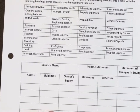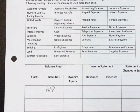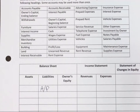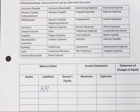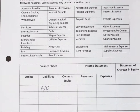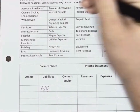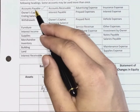Anytime you see 'payable' it's a liability. A liability is when you owe money — when you owe something. Accounts payable is when you get your bill in the mail and you owe your cell phone company. You've received your bill but you haven't paid them yet, so you have an outstanding account.